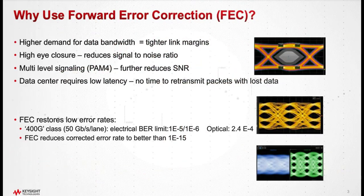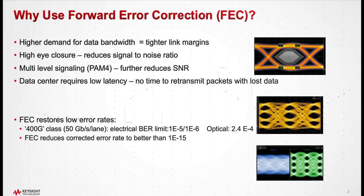So why do we need FEC in the first place? Wouldn't it have to do with higher data rates? We're constantly seeing higher data rates in the data centers, and with higher data rates that means your link margins are getting tighter, and that means more eye closure — not just in the horizontal direction with jitter, but in the vertical direction as well with signal and noise.